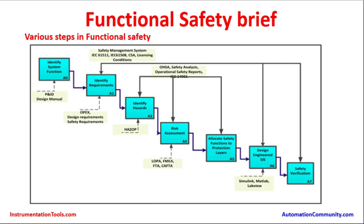How is functional safety achieved? There are many steps involved. First, identify the system with the design of the plant using P&ID and process manuals, and identify the requirements for safety, design requirements, safety recommendations, and operational excellence. Next, the hazards have to be identified using a HAZOP study. Safety analysis and operation safety reports have to be prepared based on ISO and IEC requirement standards.